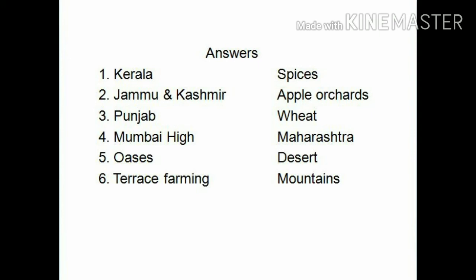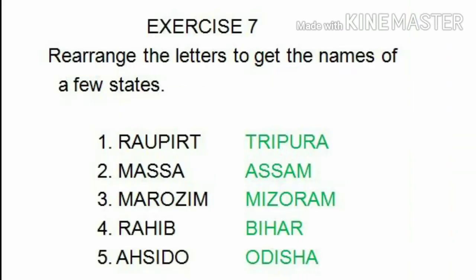Come to exercise 7. We have to rearrange the letters to get the names of a few states. Number 1: R-A-U-P-I-R-T. Arrange the letters and we will get Tripura: T-R-I-P-U-R-A.